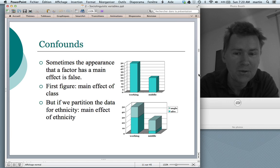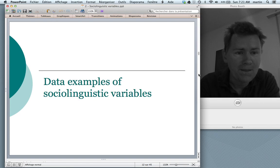However, if you don't control for the variable ethnicity, then it looks like an effect of class. In this case, we would say that ethnicity confounds the effect of class. The goal in sociolinguistic research would be to control for as many variables as possible in order not to have these confounds that might call into question the results of your study. That's everything I wanted to say conceptually about sociolinguistic variables.